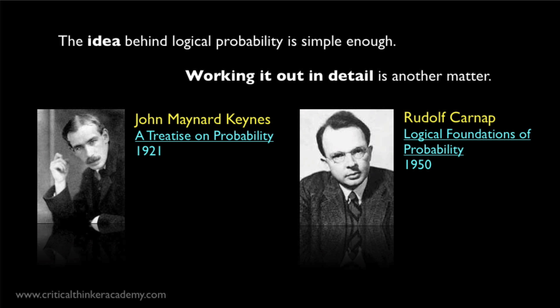The difficulty with this approach comes when you try to work out this idea in detail. For this to be a candidate for a general theory of probability, you'll need to work out a general account of what this logical relationship is and how to operationalize it, how to actually assign a value to the strength of the logical support that evidence confers on a hypothesis. And this has proven to be a very tricky problem to solve.